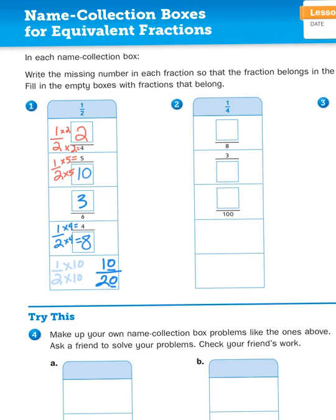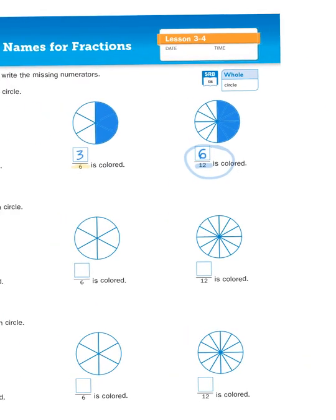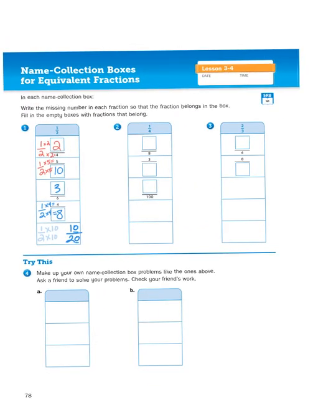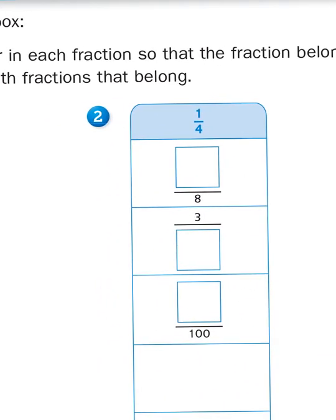As you think about equivalent fractions, it's helpful to use a visual model, but if you pick up some of the numeric strategies, it can go pretty quickly too. For number two, one-fourth compared to some fraction out of eighths — I just look at the denominators and compare them: four and eight. Four is a factor of eight because four times two is eight, meaning eight is a multiple of four. Since eight is twice as big as four, I multiply the top number by two as well, giving me two-eighths, which is equivalent to one-fourth.